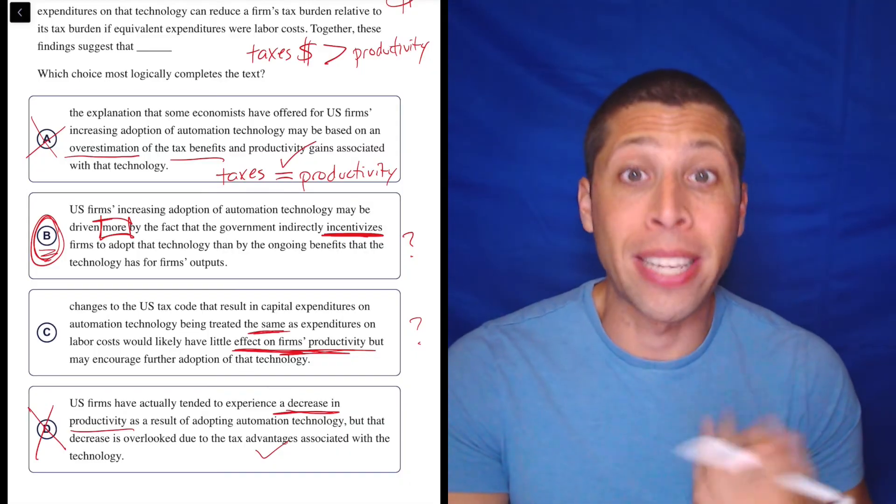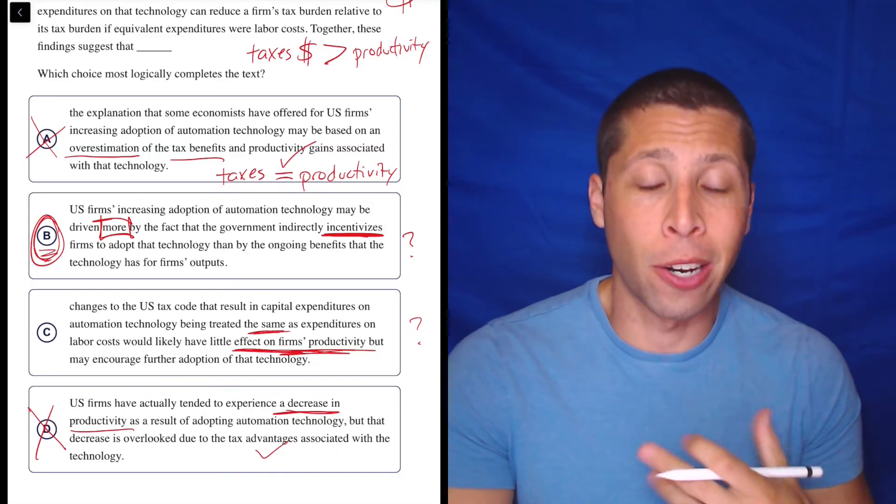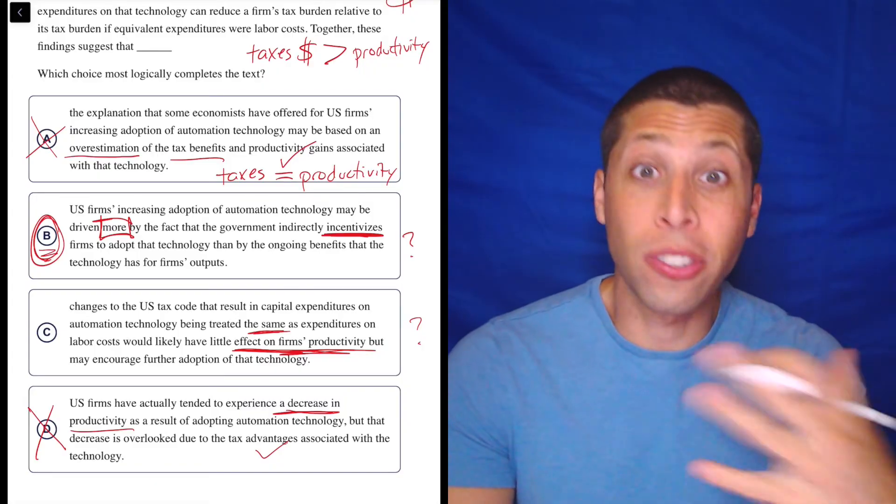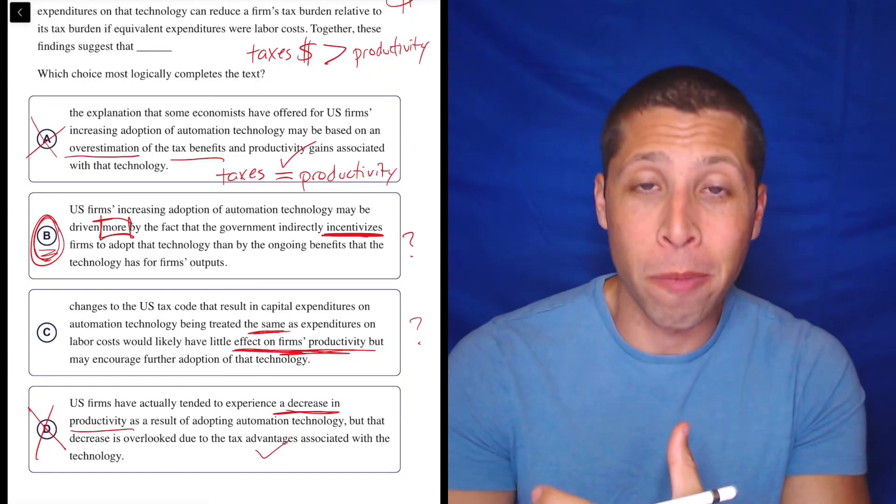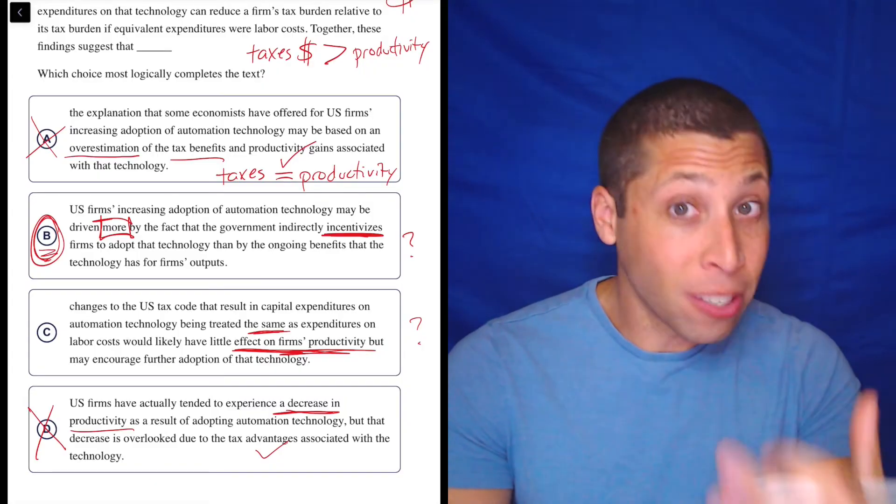So incentivize and incentive is like something that you offer to kind of get people to do what you want. So the government might offer a tax break saying, hey, you know, make this change and you'll save money in the long run because of that.